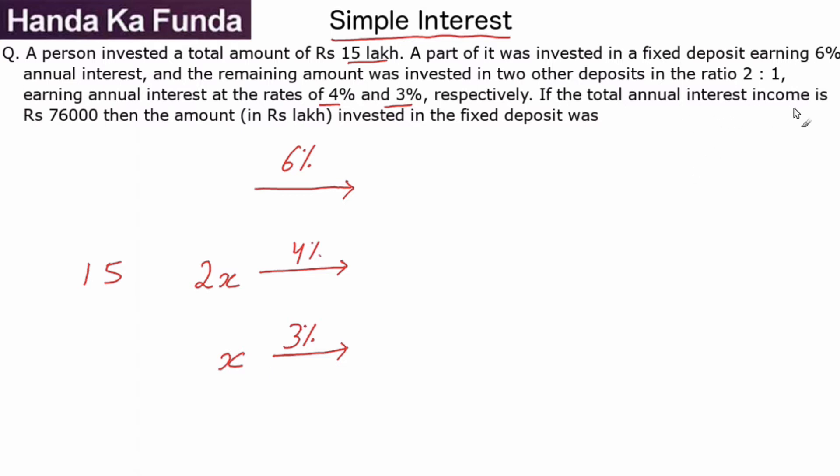If the total annual interest income is 76,000 rupees, that means the interest from the FD plus the interest from here plus the interest from here is a total of 76,000.